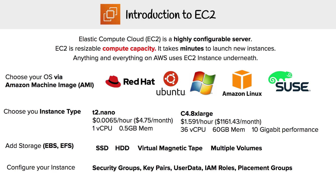We're on to the introduction to EC2. EC2 is a highly configurable server — it's resizable compute capacity, it takes minutes to launch new instances, and anything and everything on AWS uses EC2 instances underneath. Whether it's RDS, ECS, or Simple Systems Manager, at AWS they're all using EC2.